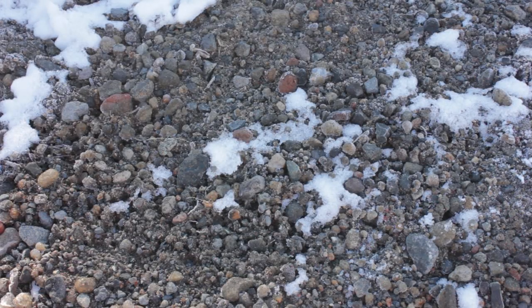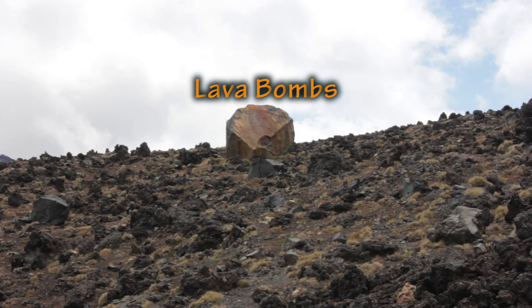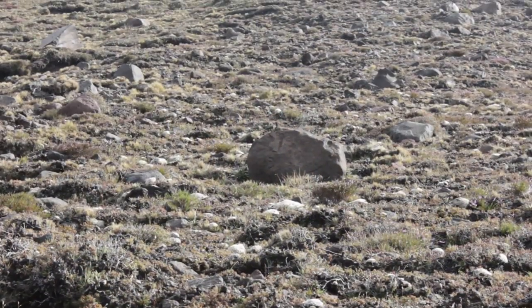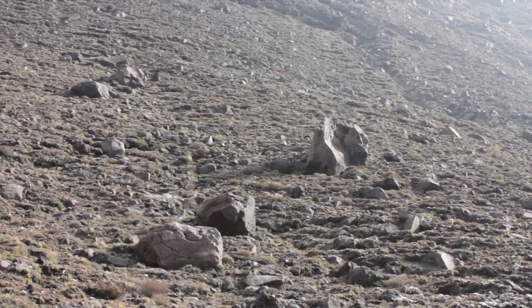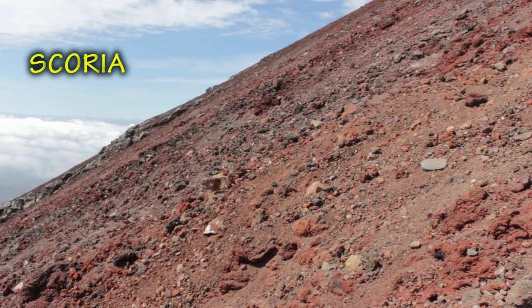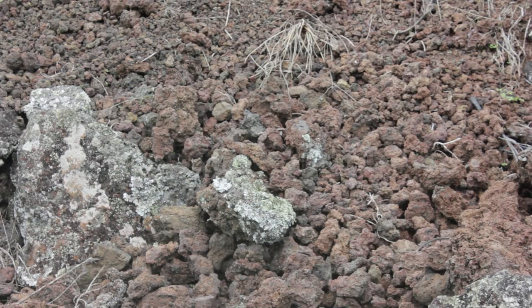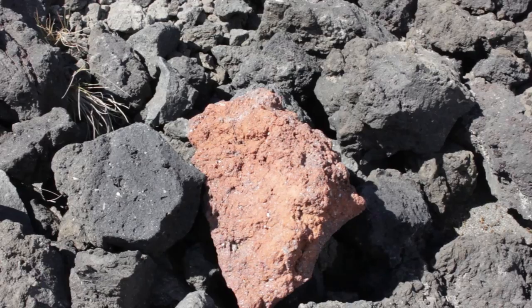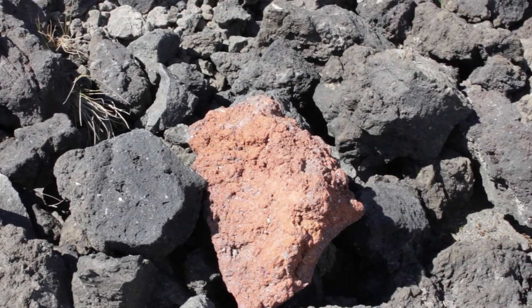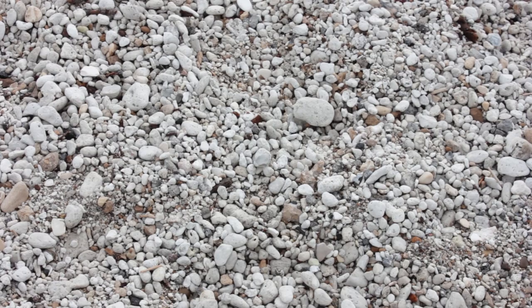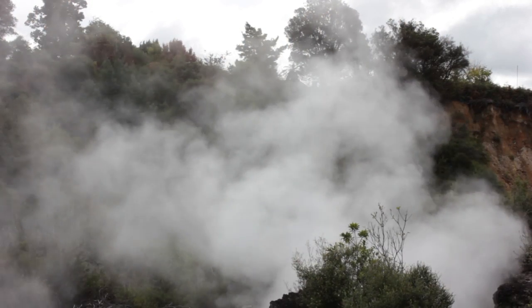Lapilli is debris between two and 64 millimeters in diameter. Lava bombs are debris more than 64 millimeters in diameter, and bombs rarely land more than four to five kilometers away. Scoria is a pyroclastic rock which has been rapidly cooled in flight and so is pockmarked by air bubbles — the darker the scoria, the richer it is in iron content. Pumice is a light rhyolitic rock which has a porous nature due to the release of a lot of gases during an eruption.